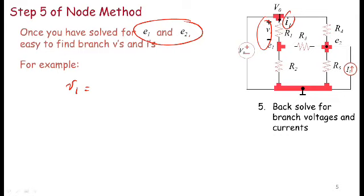All right, so V1 here is simply the difference between V0 and E1. V1 is simply V0 minus E1. That's it. What about I1? That is pretty simple too. I1 is simply V1 divided by R1.